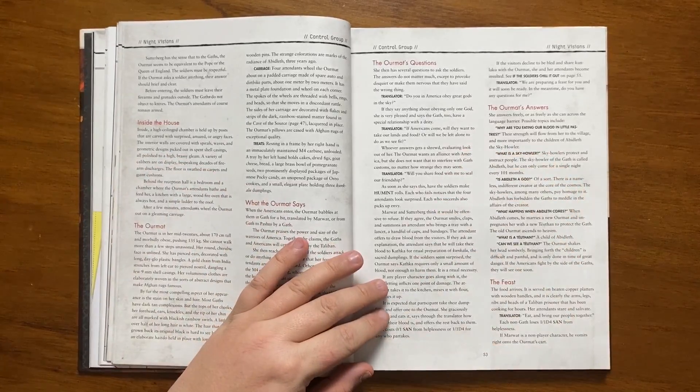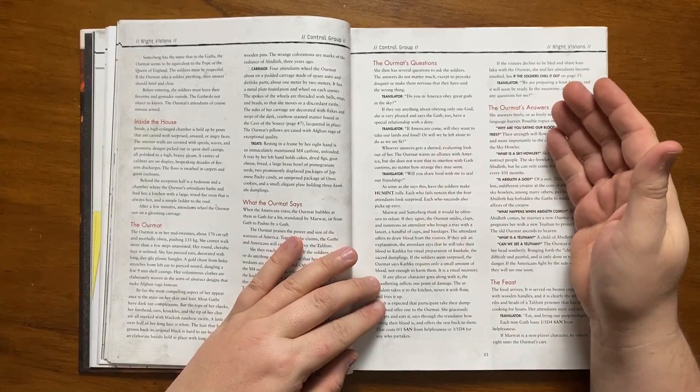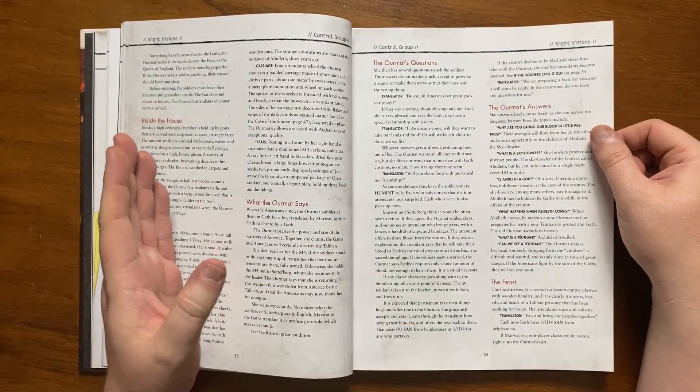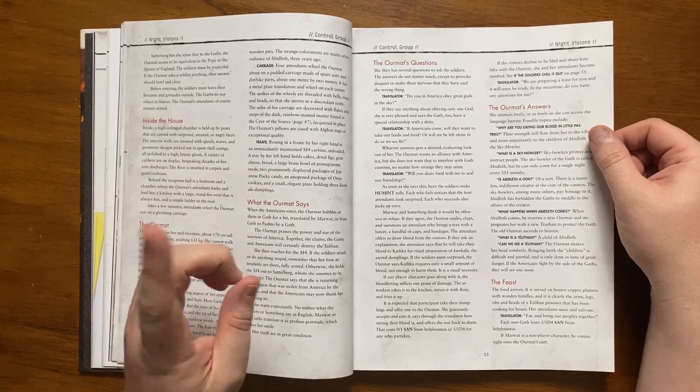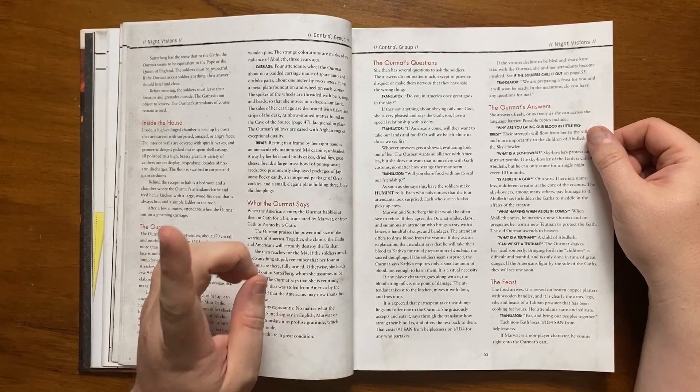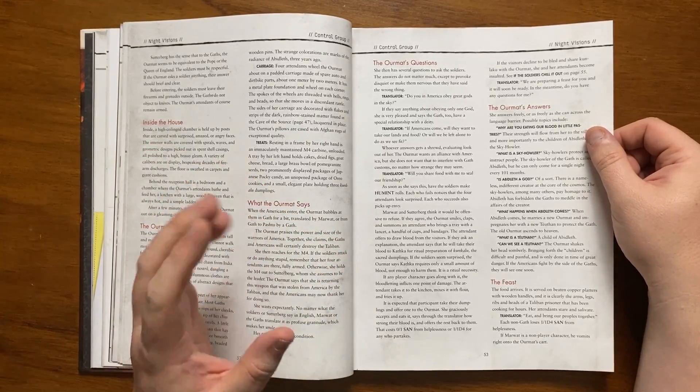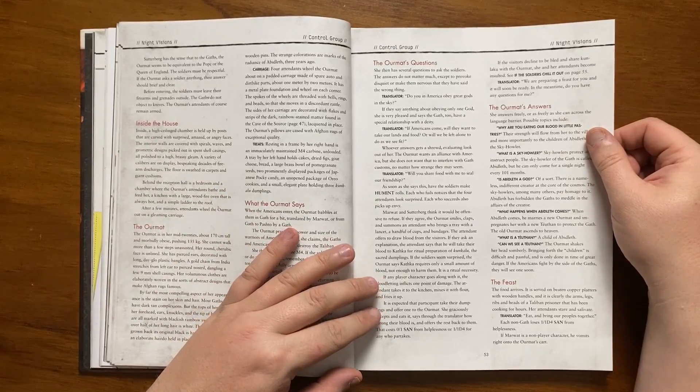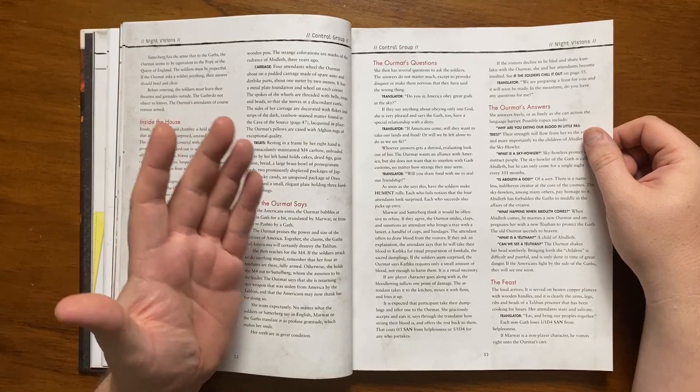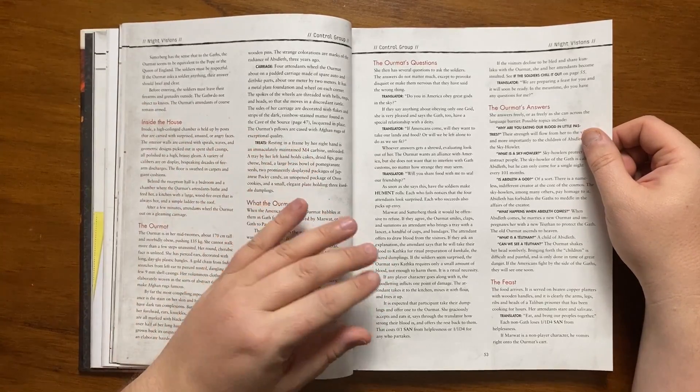She will babble away to them in gath which will be translated by Marwat or Pashto by Agath. The Ormat will praise the power and size of the Americans stating that together they will destroy the Taliban. She will then reach for the M4 which may cause a moment of panic from the soldiers and then hand it to Sutterberg whom she assumes having come from a matriarchal society as their leader. She states that she is returning it as it was stolen by the Taliban and now the Americans can show thanks to her for doing so. She will accept all praise with an enthusiastic smile. The Ormat then has some questions for the Americans. She will ask if great gods and the sky are worshipped in America and whether the Americans want to take their land, food and change their way of life.